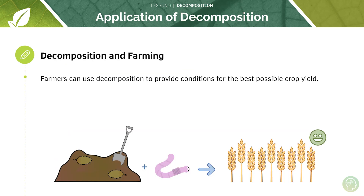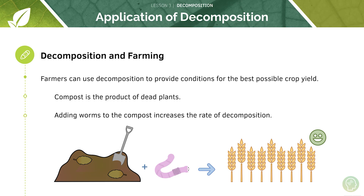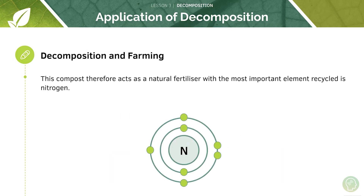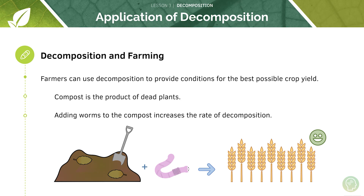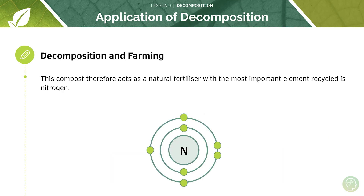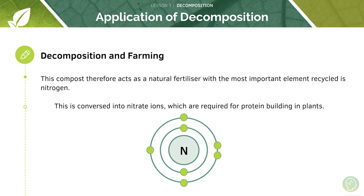The final tutorial point is the application of decomposition. Farmers can use decomposition to provide conditions for the best possible crop use. Compost is the product of dead plants, and adding worms to compost increases the rate of decomposition. Farmers provide strong conditions for decomposition, then apply compost to their crops to provide new mineral ions. The compost acts as a natural fertiliser, and the most important element recycled is nitrogen, which is converted into nitrate ions required for protein building in plants.